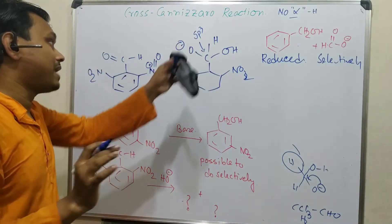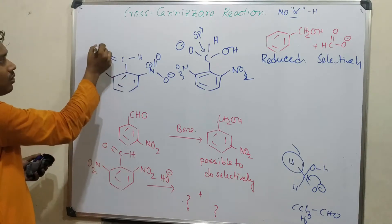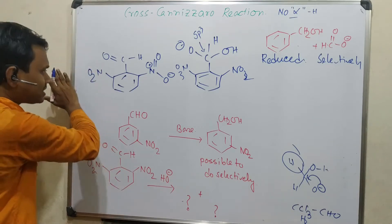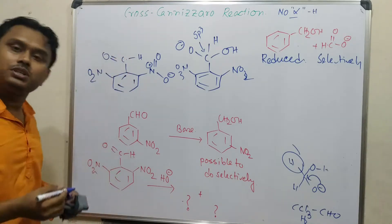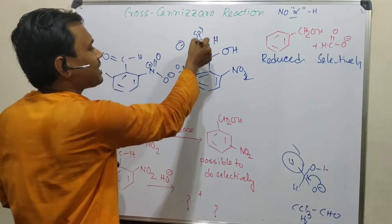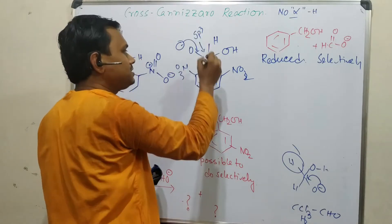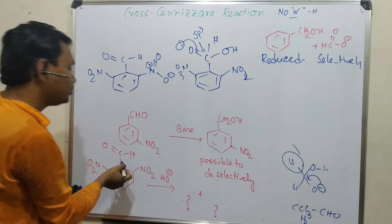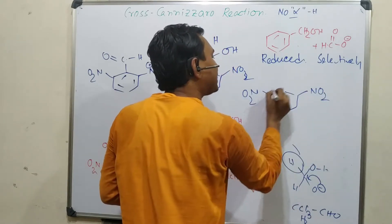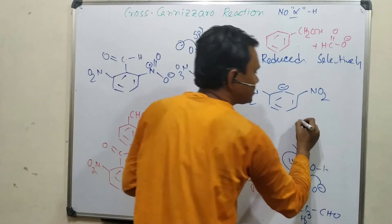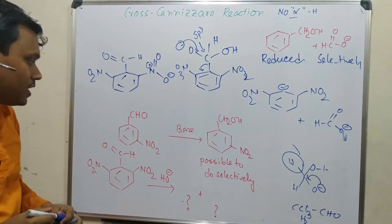However, in the ortho-dinitro case, the nitro groups force the aldehyde out of the plane of the ring — it lies perpendicular to the ring plane — making the carbonyl carbon accessible to attack. After nucleophilic attack forms the sp3 center (O⁻), instead of the hydride migrating to another molecule, it comes back intramolecularly, producing the dinitrobenzyl anion, and the formaldehyde is oxidized to formic acid. This intramolecular pathway is the unique feature of the ortho-dinitro effect.